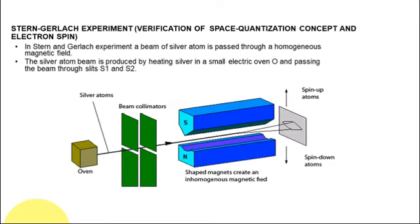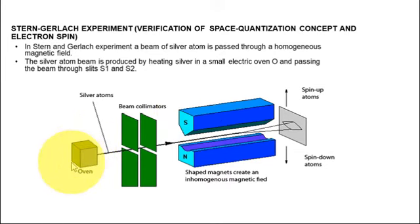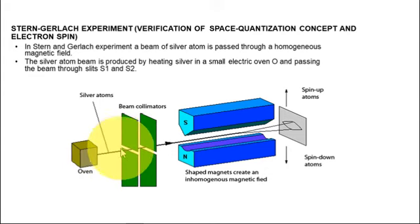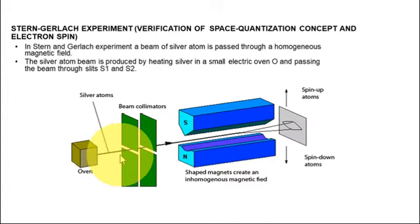Let us see the experimental setup. In the Stern-Gerlach experiment, the parts include an oven — an instrument used for heating — where silver atoms are heated. The next part is two slits, also called collimators. The silver atoms heated in the oven come out in the form of a beam, which passes through two slits so that the beam of silver atoms is parallel and straight.